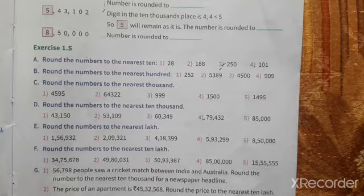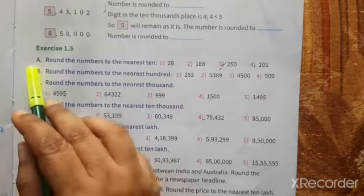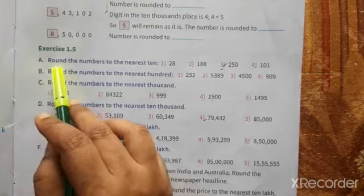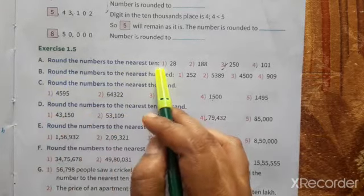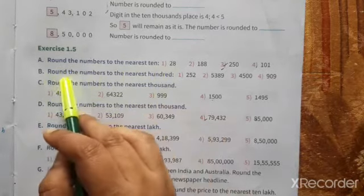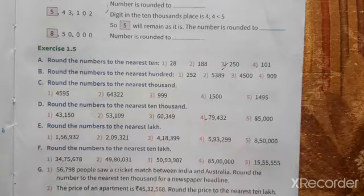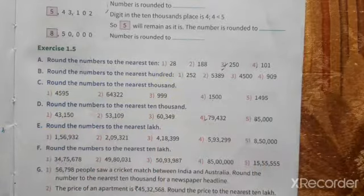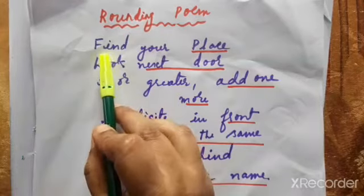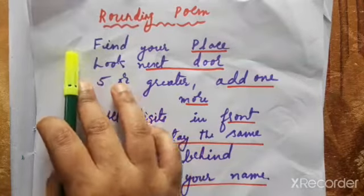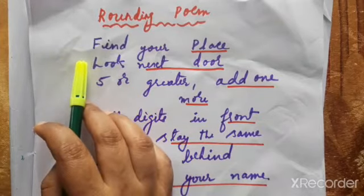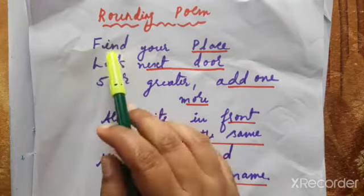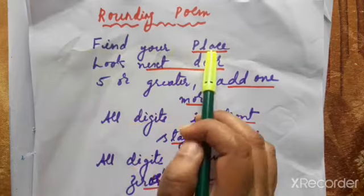Here, part A means round the number to the nearest 10, and part B means round the number to the nearest hundred. Now, this is the rounding number poem. With the help of this poem we can round the number or estimate the number very easily.